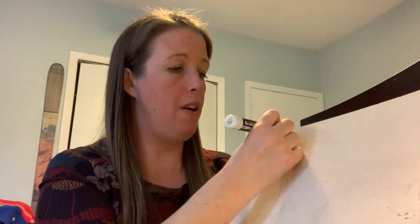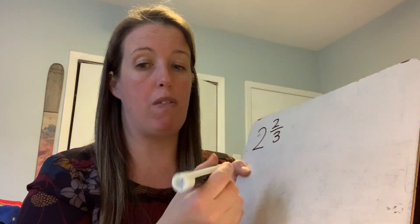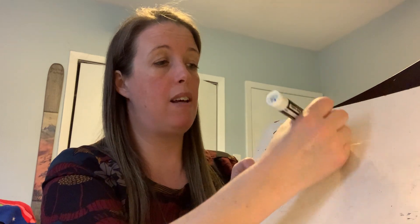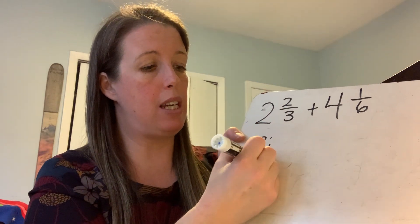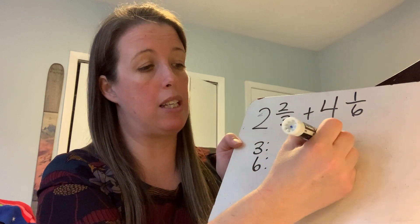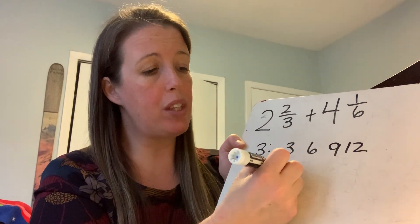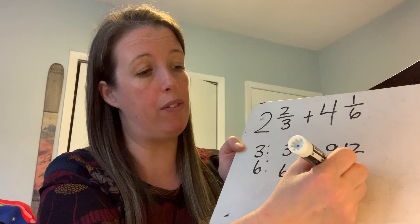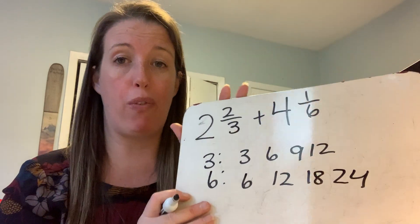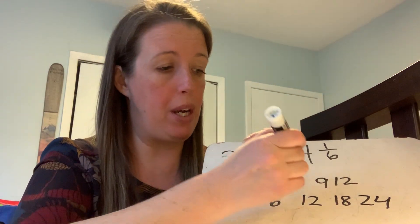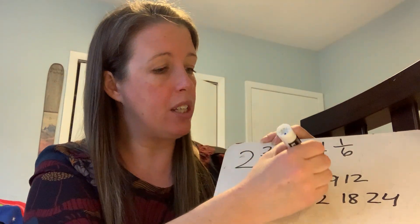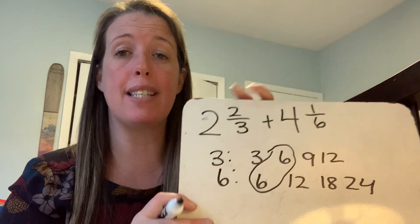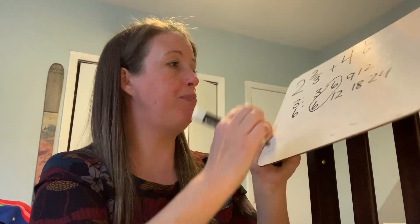We have two and two-thirds plus four and one-sixth. I'm going to look for my multiples of three and six: 3, 6, 9, 12 — and 6, 12, 18, 24. They have two in common, but I'm going to pick the least common multiple, which is six. Let me give myself some more room.